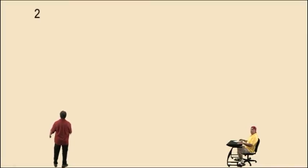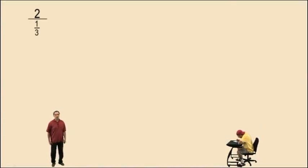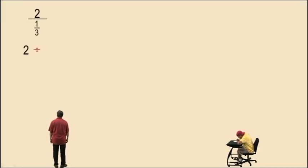Hey Charlie, you ready to divide with fractions? Alright, let's get started right there. Let's take the number two and divide by the fraction one-third. In other words, we're trying to figure out how many one-thirds go into two. We can rewrite this problem as two divided by one-third using that division symbol.